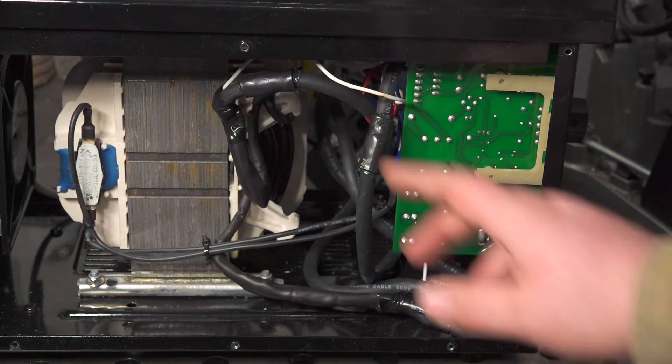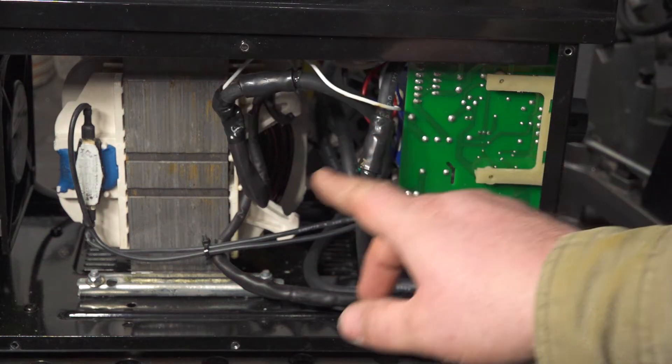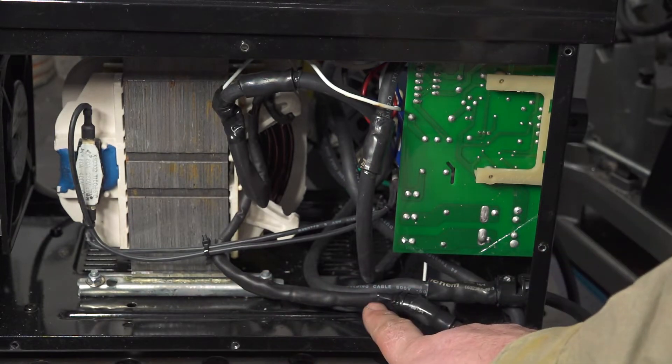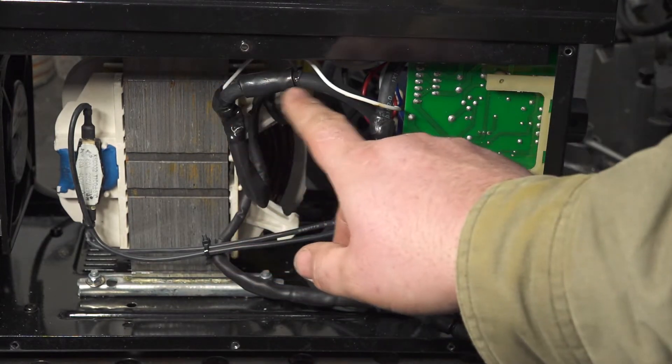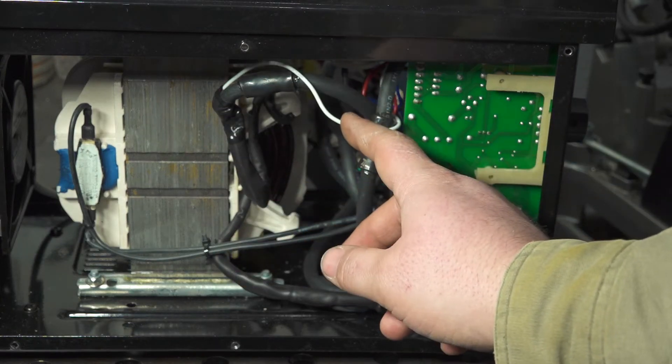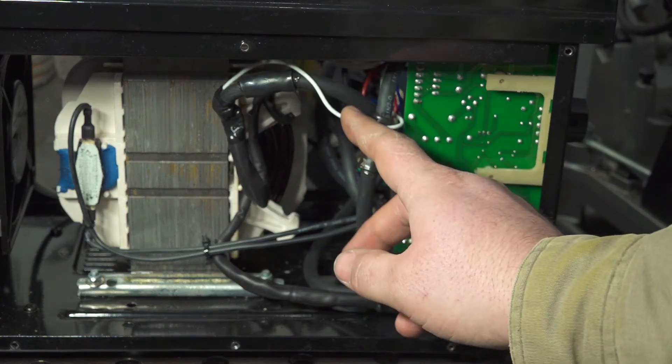Also these little wires that go up to the controls, those come directly off of the output of the transformer so you definitely want to make your splices after those wires, or basically either way just make sure that these wires end up at the end on the AC side.